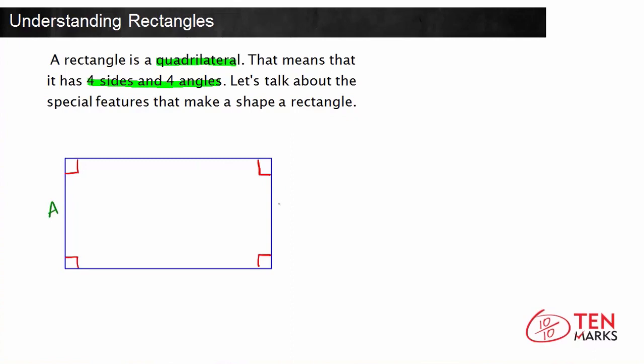This side we'll call A. Its opposite is over here. Now, these two sides are equal in length, and they run parallel, which means the lines of these two sides will never intersect.